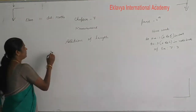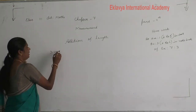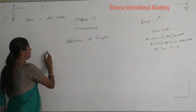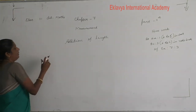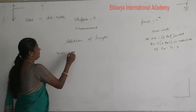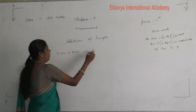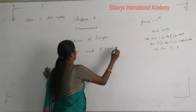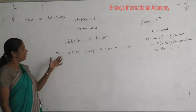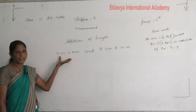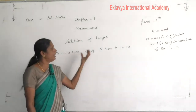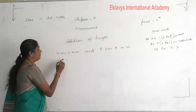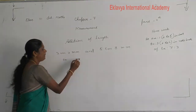First example: 3 centimeter 4 millimeter and 5 centimeter 8 millimeter. Here there are 2 units — centimeter and millimeter. Here also 2 units — centimeter and millimeter. You make 2 columns: centimeter and millimeter.